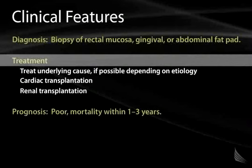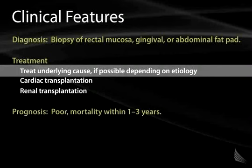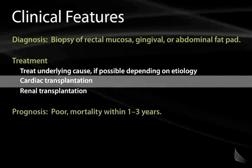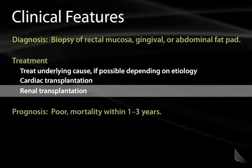Unfortunately, treatments for amyloidosis are rather limited. Since amyloidosis results from another specific underlying condition — often a chronic inflammatory disease — one should treat the underlying condition to address the amyloidosis. If the heart is affected with restrictive cardiomyopathy, one should consider cardiac transplantation. If the kidney is affected with glomerular amyloid deposition, renal transplantation is sometimes an option. However, if the underlying condition is not treated, these newly transplanted organs will eventually be affected by amyloid deposition as well.